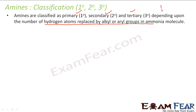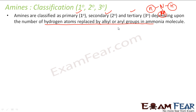As I told, amines are nothing but derivatives of ammonia. So you have ammonia as the base. If you replace one hydrogen with an alkyl or aryl group, you call it a primary amine. Replace two hydrogens and you get a secondary amine. Replace all three hydrogens and you get a tertiary amine.